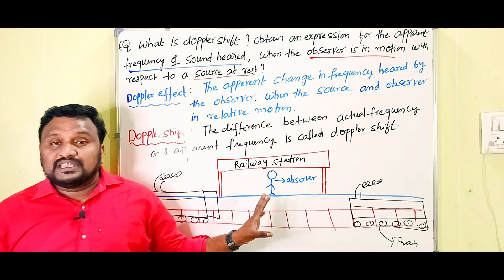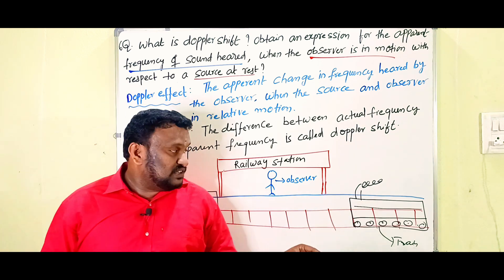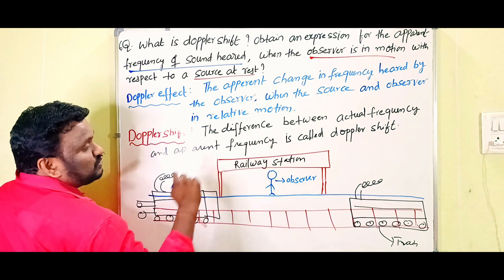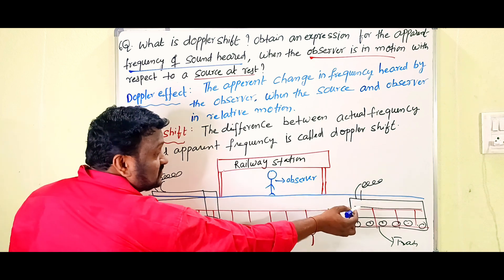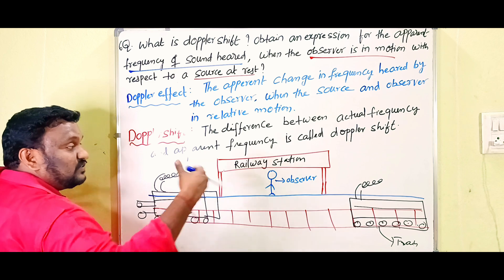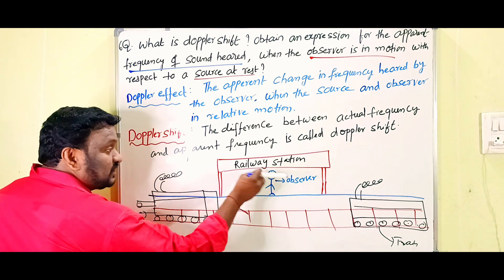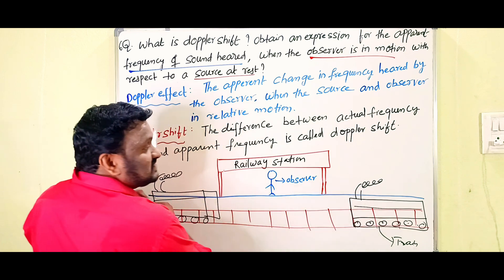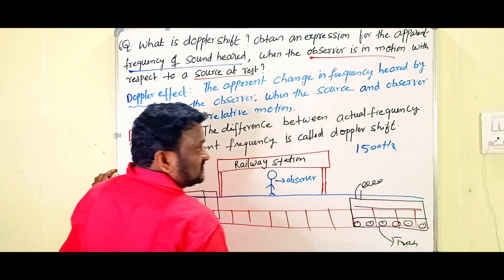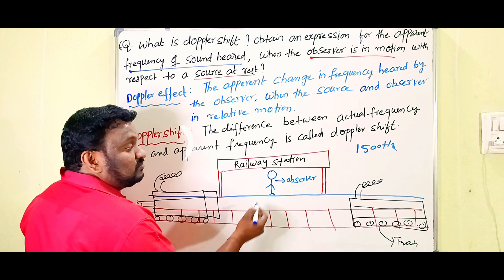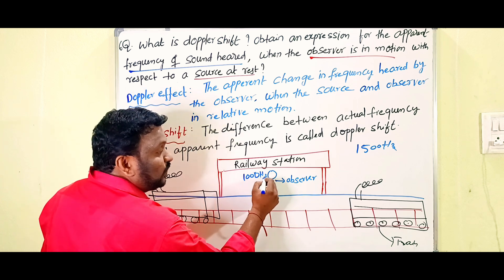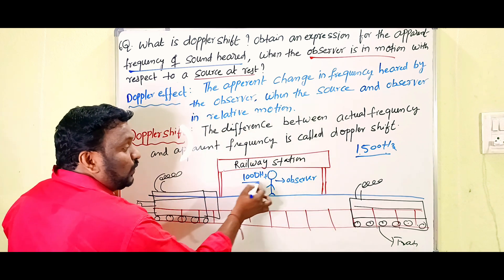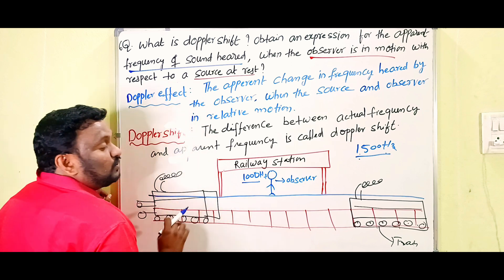When the train approaches towards the railway station, the observer can hear more sound — sound is increased. And again when the train is moving away from the station, the observer can hear less sound. Actually, there is no change in the real sound produced by the train horn. The frequency heard by the observer changes. That difference is what we call Doppler shift. For example, if the actual frequency is 1500 Hz but when the train is far away the observer receives only 1000 Hz, the difference of 500 Hz is the Doppler shift.